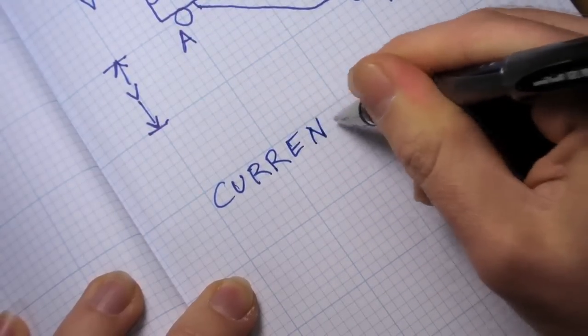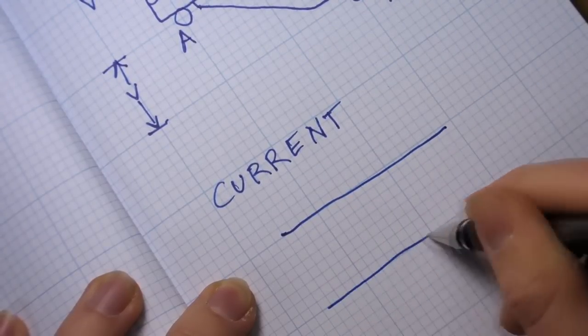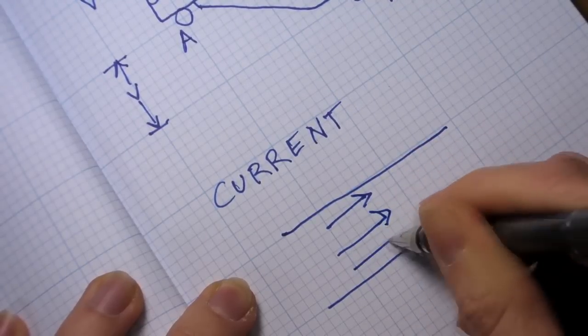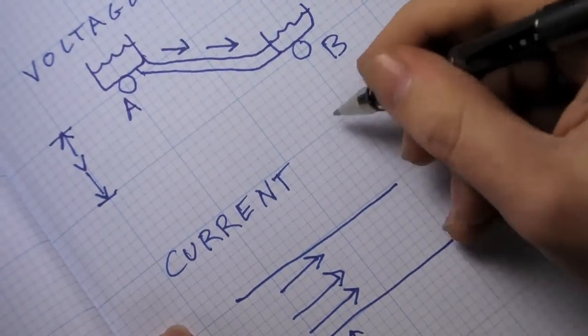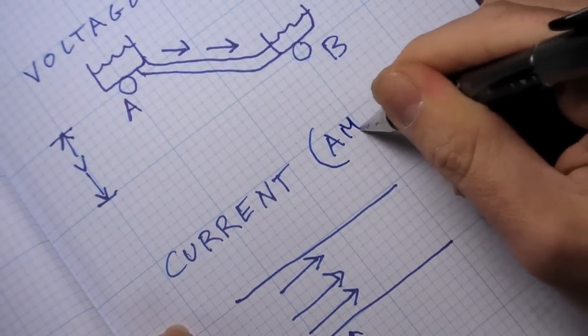Current refers to the rate at which electrons flow through a given point, and current is measured in amperes.